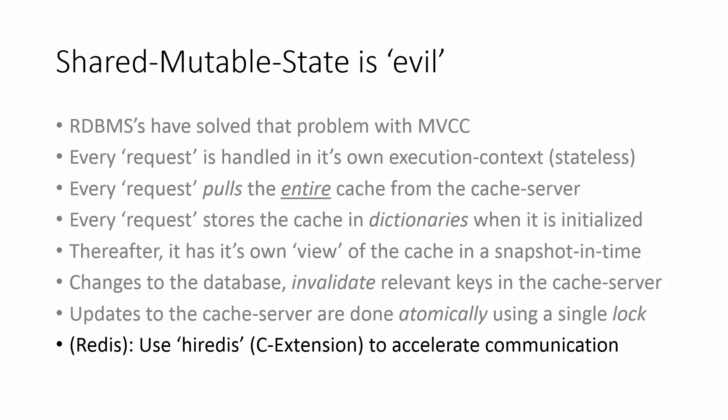Usually these are really, really small changes and really fast because the cache server is fast and communication with it should be fast, so it shouldn't be an issue. We were using Redis for the cache server — a no-SQL memory store, a simple key-value store. It has a C extension to accelerate communication between the Python process and the Redis server. As I said, use C extensions wherever possible.